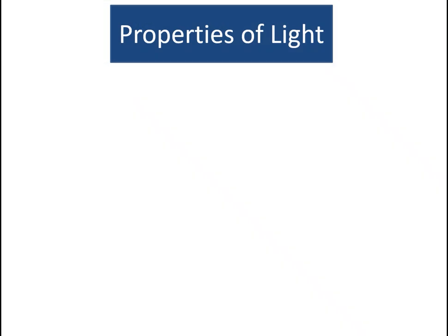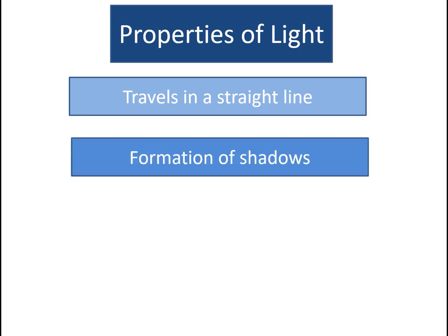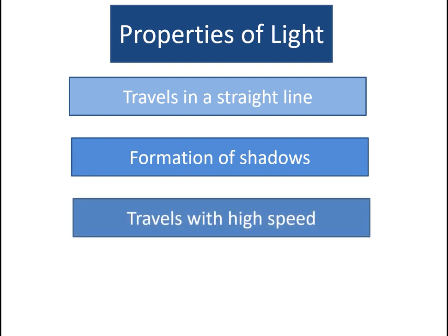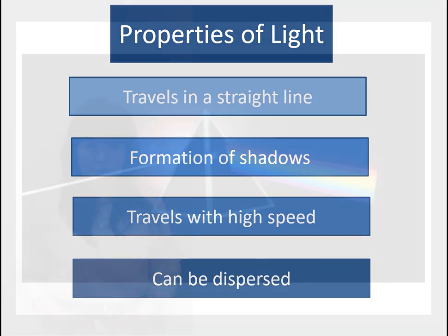Let's make a summary on what we have learned about the properties of light. Light travels in a straight line. Light forms shadows when it is blocked by an opaque object. Light travels with high speed. Light can be dispersed.